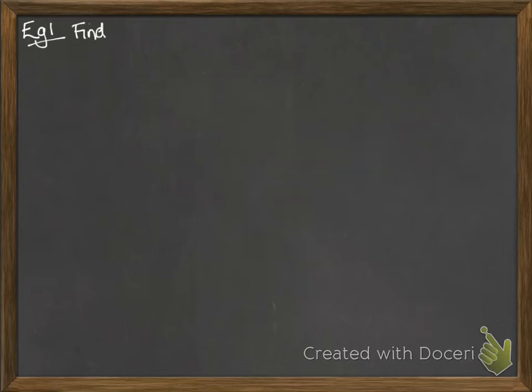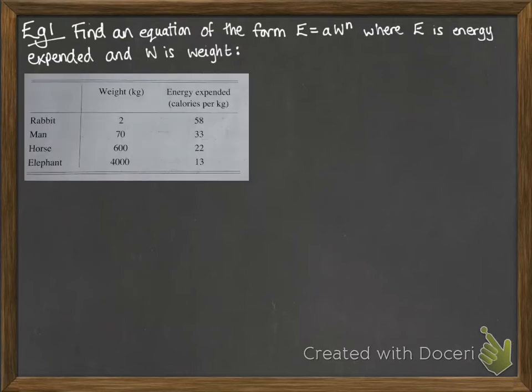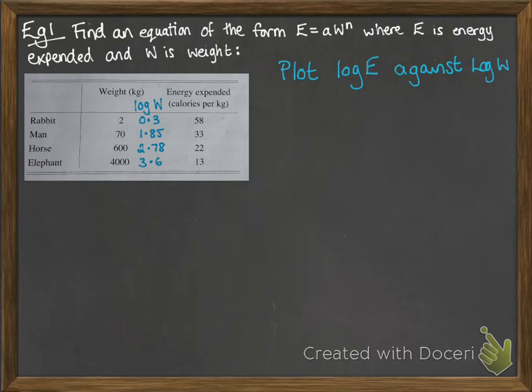Let's have a look at how to actually use this. We are going to find an equation of the form E equals AW to the n, where E is energy expended and W is the weight. This is like saying y equals ax to the n, that first form that we had. We've got weights in kilos and energy expended for a rabbit, man, horse and elephant. First thing is to plot log E against log W.